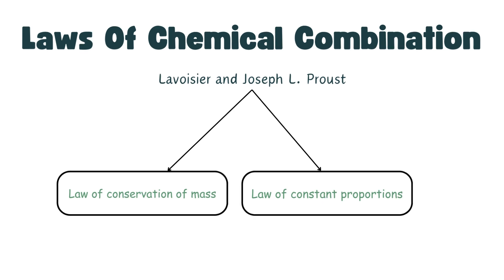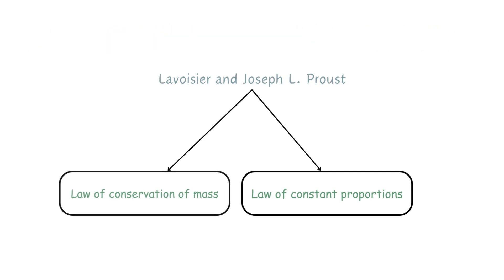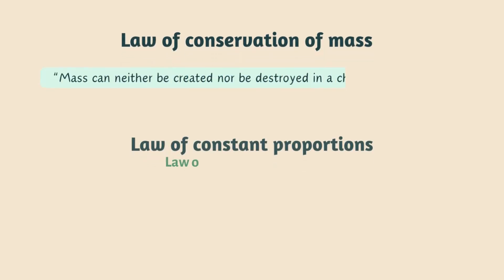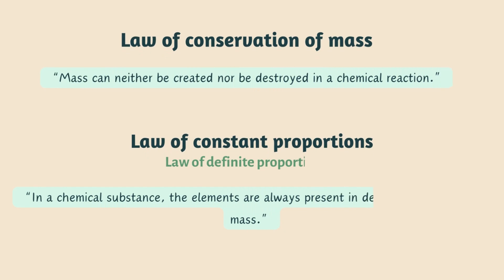First one is law of conservation of mass. It states that mass can neither be created nor be destroyed in a chemical reaction. The mass of a substance cannot be created or destroyed, it can only be transformed from one form to another. It can only be converted to another form, it cannot be destroyed and nothing new is created.